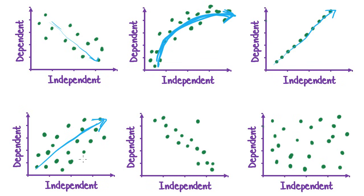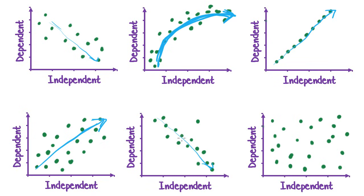The fourth one is generally going in a positive direction — as independent values increase so do dependent values — but there's not much strength because they're all over the place, so this is a fairly weak association with no outliers. The fifth one has a linear relationship going down the page, so it's negative. At first glance it seems strong, except there's an outlier way out from the rest, so you can't make a firm statement about strength without noting that outlier. The last one looks completely random — no pattern of any kind — so that one has no association whatsoever.